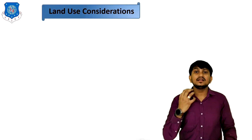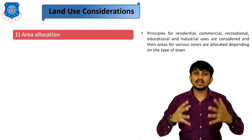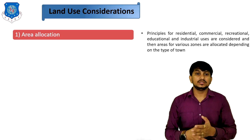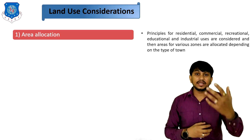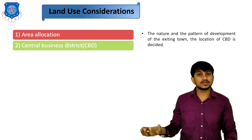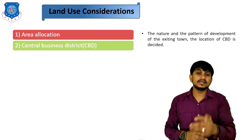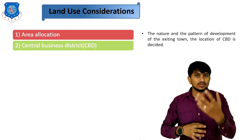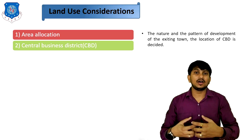Now let's see the points required in land use planning. First is area allocation, in which residential, commercial, recreational, educational, and industrial uses are considered and areas are allocated depending on the type of the town — some towns are developed for educational purposes, some for residential. Second is the central business district, or CBD. The location of the CBD is decided based on the nature and pattern of development, and it is generally placed at the central part of the area for easy accessibility.